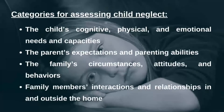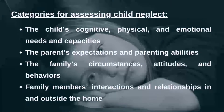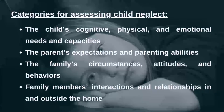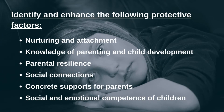Overarching categories for assessing child neglect include the child's cognitive, physical, and emotional needs and capacities; the parents' expectations and parenting abilities; the family circumstances, attitudes, and behaviors; and the family members' interactions and relationships in and outside the home.